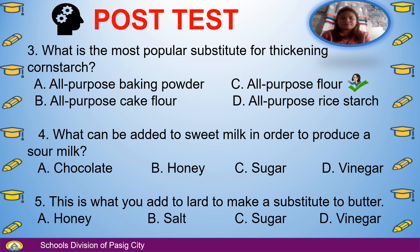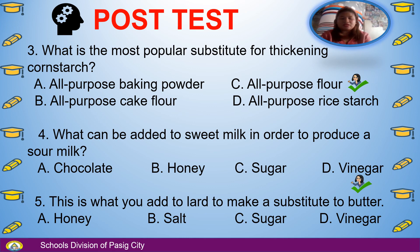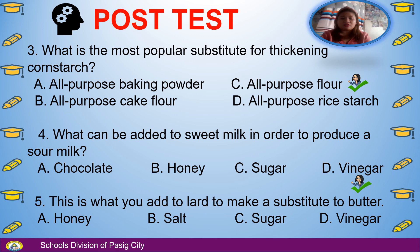Number 4: What can be added to sweet milk in order to produce a sour milk? A. Chocolate, B. Honey, C. Sugar, D. Vinegar. The answer is D, Vinegar. Number 5: This is what you add to lard to make a substitute to butter. A. Honey, B. Salt, C. Sugar, D. Vinegar. The answer is B, Salt.